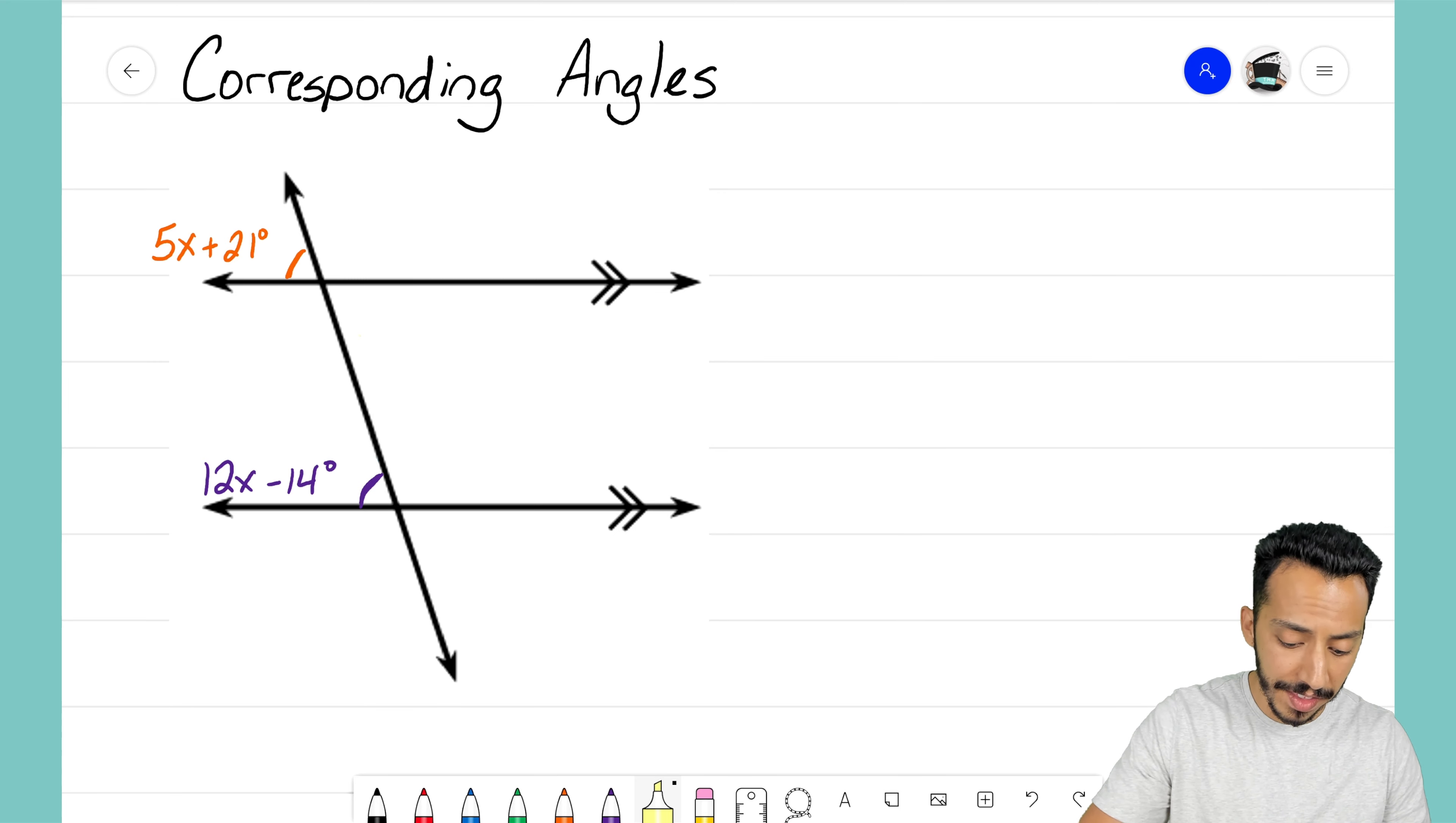Now notice though we have our third line there that comes through and intersects our two parallel lines. That is the transversal line, and when you have a transversal cutting two parallel lines, we end up creating a bunch of angle relationships.